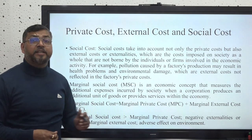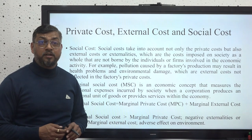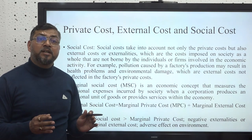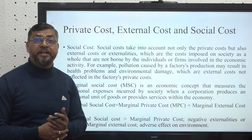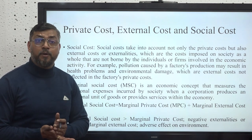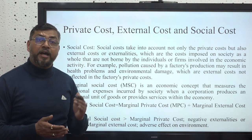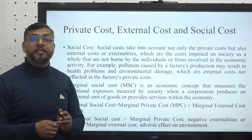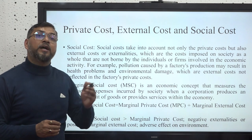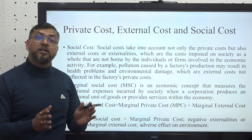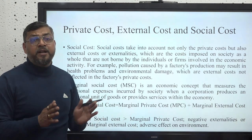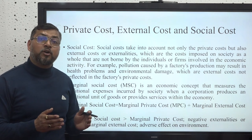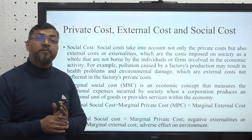Social cost takes into account not only the private cost incurred in the production process but also the external cost or externalities that can impact society and people. For example, if a factory causes pollution, that pollution is included in the social cost calculation. Social cost is a mix of both private costs and external costs. When evaluating any project or production process, we must consider private costs, external costs, and social costs to make a justified decision.